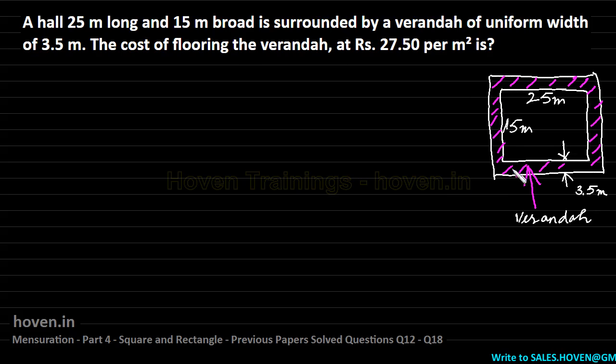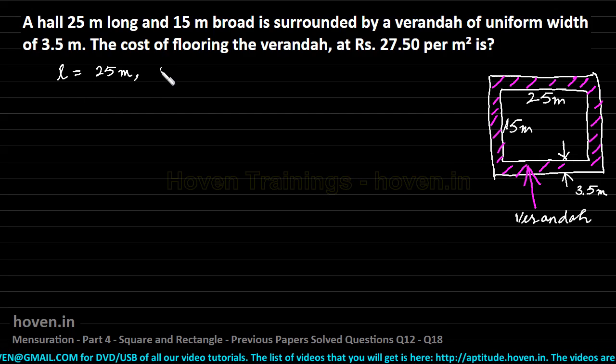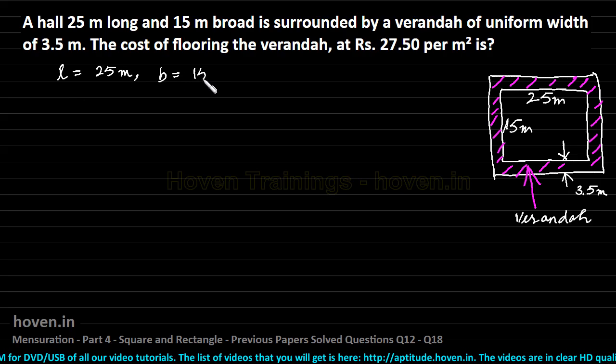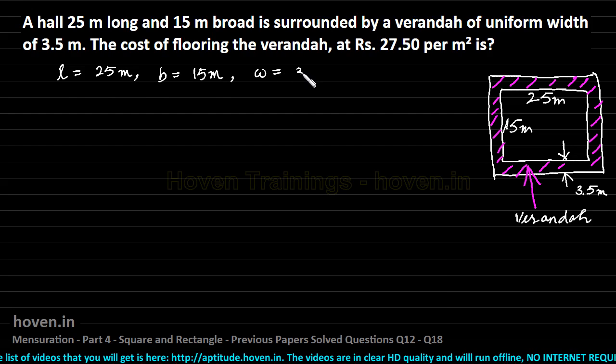Now, the formula for the area of this shaded portion, when the shaded portion lies outside the rectangle, that we have already derived in one of our videos and we can use that as our shortcut method. Now, what do we have with us? We have L equal to 25 meters, we have B equal to 15 meters, and the width of the surrounding veranda has been given to us as 3.5 meters.